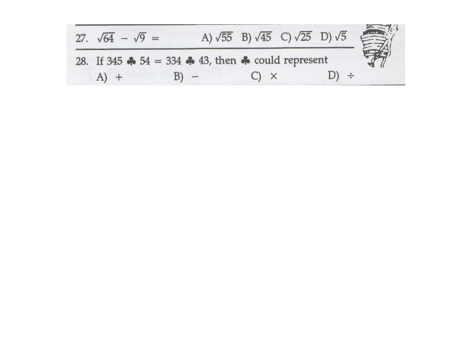Root 64 minus root 9 is 8 minus 3, which equals 5. That's not directly one of the answer choices, but the equivalent is root 25, which also equals 5. So C is the answer for number 27.